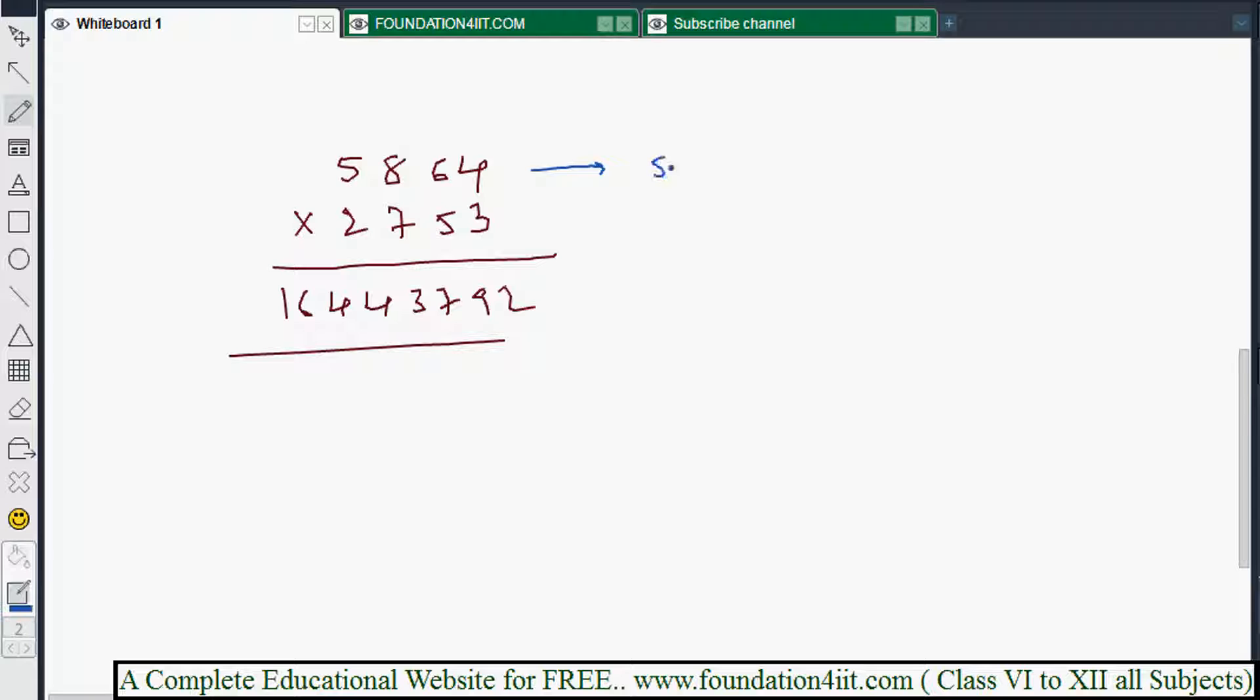SDS of the first number is 5. SDS of the second number: 2 plus 7 is 9, you can cut it, 5 plus 3 is 8. Multiply 5 into 8 equals 40, which is 4. Now for the product, there's a 9 you can cut, 7 plus 2 is also 9, remove it. 1 plus 6 plus 4 plus 4 plus 3 equals 18, which is 1 plus 8 equals 9.